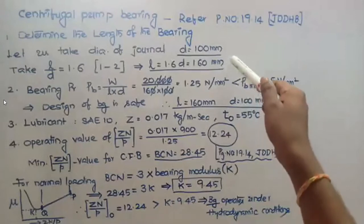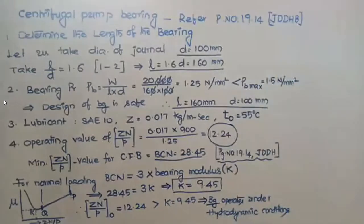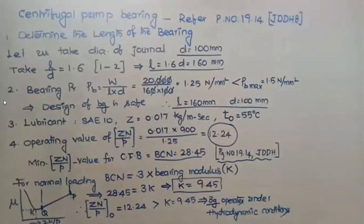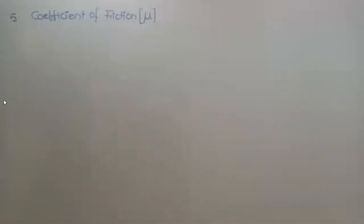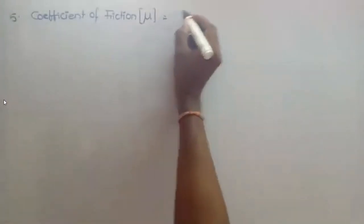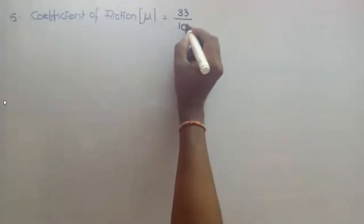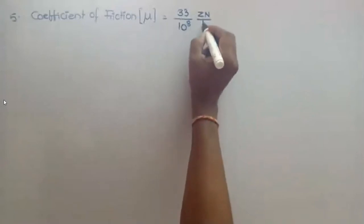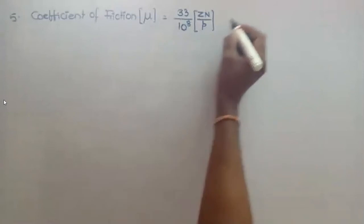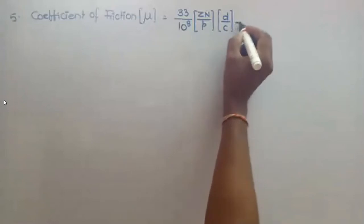To summarize: we first found out the values of L and D, then checked whether these values are correct using bearing pressure as the parameter. Next we considered lubricating oil properties and then the operating value of ZN/P. The next step is determination of the coefficient of friction. The empirical relation is: mu is equal to 33 by 10 to the power 4 multiplied by ZN/P multiplied by D/C, plus small K (end leakage factor).